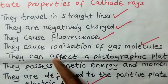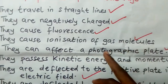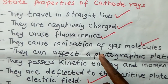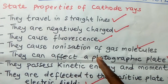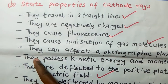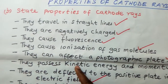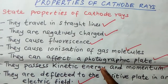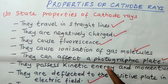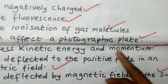They affect a photographic plate. When you put it where cathode rays are passing, they will affect it. Because they are fast-moving electrons, and anything which is in motion has kinetic energy. So they possess kinetic energy and momentum.